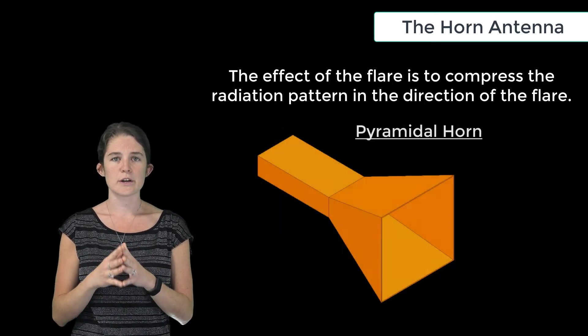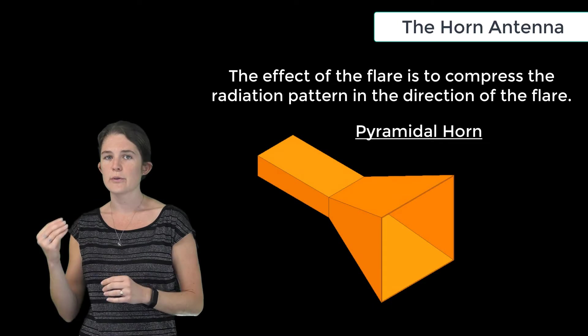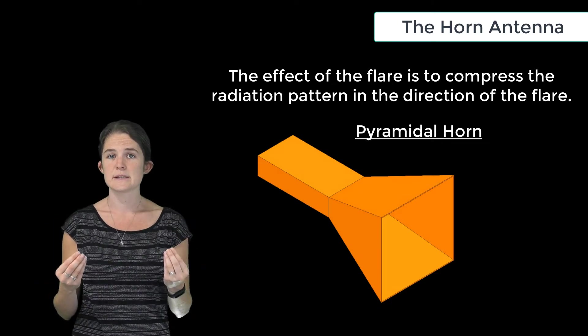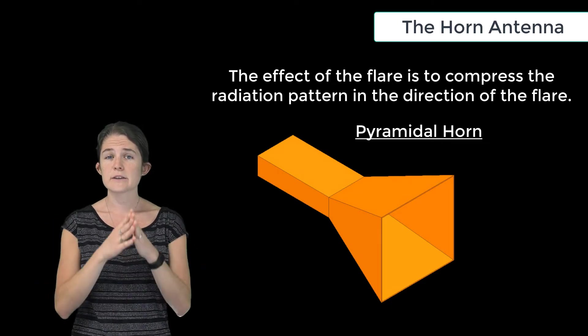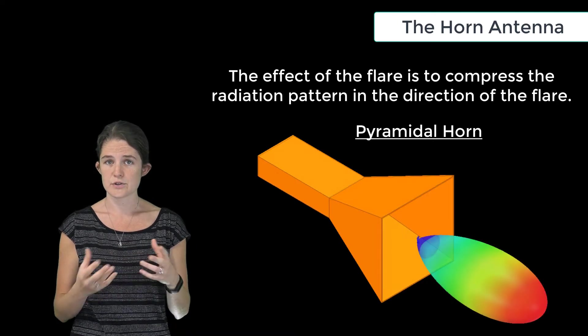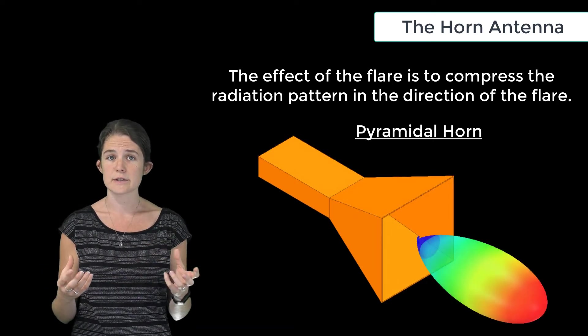The pyramidal horn combines the positive attributes of both the E-plane and the H-plane sectoral horns. It flares in both directions, and its radiation pattern is constrained both vertically and horizontally. Pyramidal horns can achieve very focused radiation and very high directivity because of that two-dimensional flare.